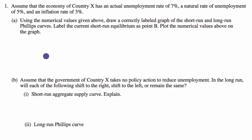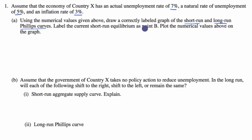In this video, I want to tackle an entire AP Macroeconomics free response exercise. Assume that the economy of country X has an actual unemployment rate of 7%, a natural rate of unemployment of 5%, and an inflation rate of 3%. Using the numerical values given above, draw a correctly labeled graph of the short-run and long-run Phillips curves. Label the current short-run equilibrium as point B and plot the numerical values on the graph.